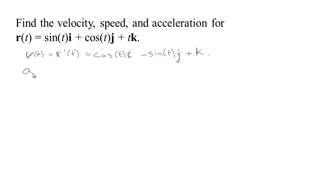And our acceleration is going to be the derivative of the velocity, that's the second derivative of position. The derivative of cosine is minus sine t i, and the derivative of minus sine is minus cosine t j. And the derivative of a constant times k is just 0. So we get this for the acceleration.